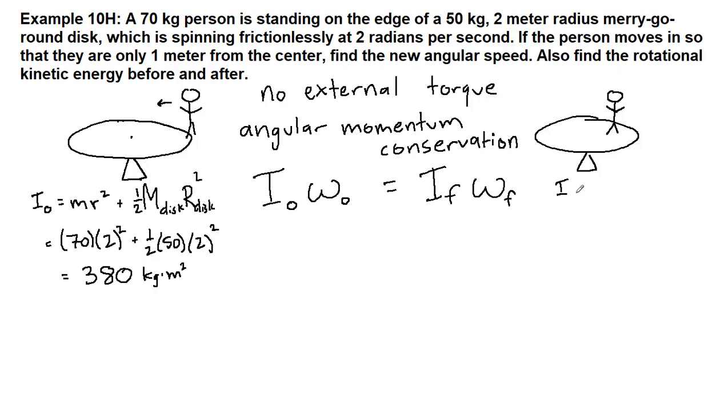The moment of inertia at the end is the person standing at the new location plus the one half m disc r disc term again. In this case we have the person 70 kilograms now at a distance of 1 meter that gets squared, and then the second term stays the same. Our total moment of inertia at the end of the problem is 170 kilograms meters squared.